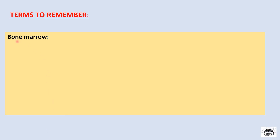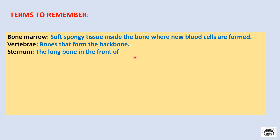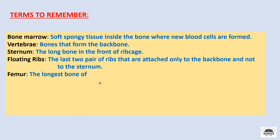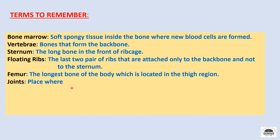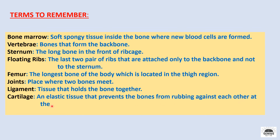Terms to remember: Bone marrow — soft spongy tissue inside the bone where new blood cells are formed. Vertebrae — bones that form the backbone. Sternum — the long bone in the front of the rib cage. Floating ribs — the last two pairs of ribs attached only to the backbone and not to the sternum. Femur — the longest bone of the body, located in the thigh region. Joints — the place where two bones meet. Ligament — tissue that holds the bones together. Cartilage — an elastic tissue that prevents the bones from rubbing against each other at the joint.